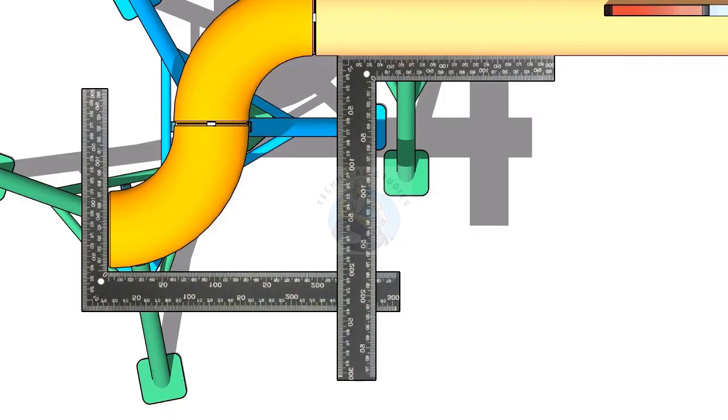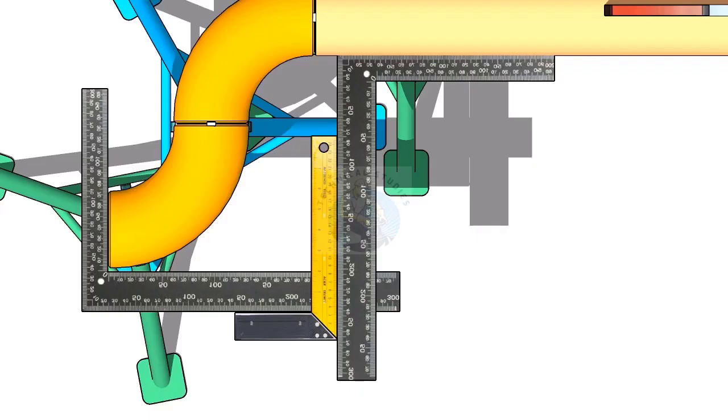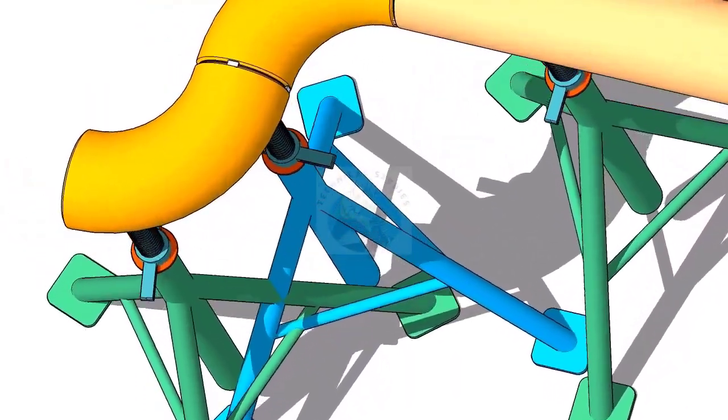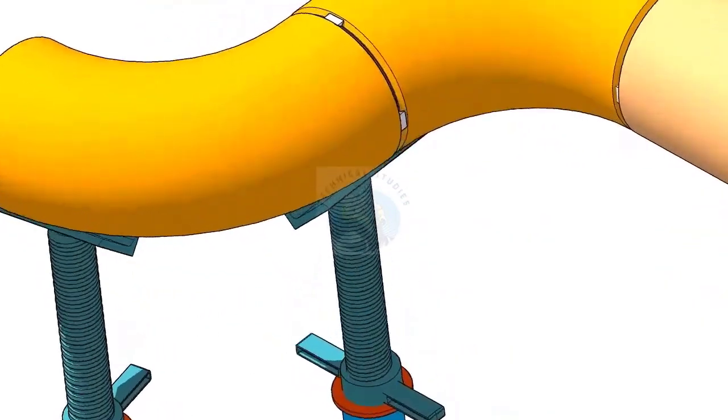Hold two right angles, one on the face of the elbow and one on the pipe side. Now use another right angle and check the squareness, tack weld on both sides of the elbow.